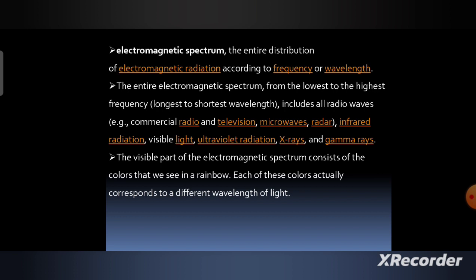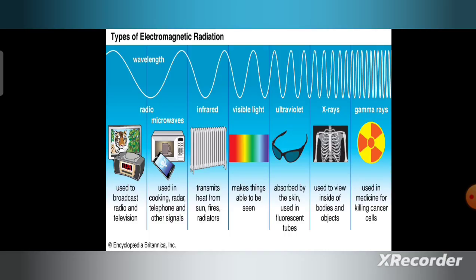The visible part of the electromagnetic spectrum consists of the colors that we see in a rainbow. Each of these colors actually corresponds to a different wavelength of light. There are various types of electromagnetic radiation according to their wavelength: radio waves, microwaves, infrared rays, visible light, ultraviolet rays, x-rays, and gamma rays.